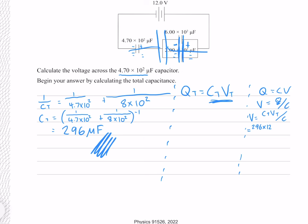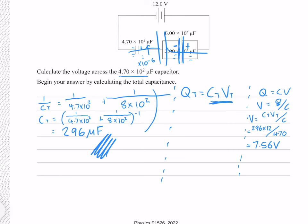It's worth noting that the micro symbol (times 10 to the minus 6) was omitted throughout because when adding values both in microfarads the result is in microfarads, and when dividing microfarads by microfarads they cancel. If you're confident doing this then proceed the same way; if not, always convert to the SI unit of farads.